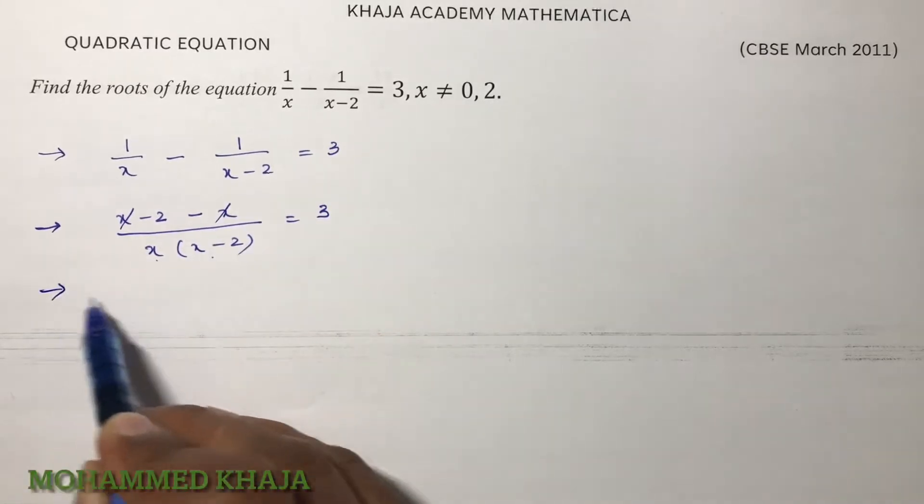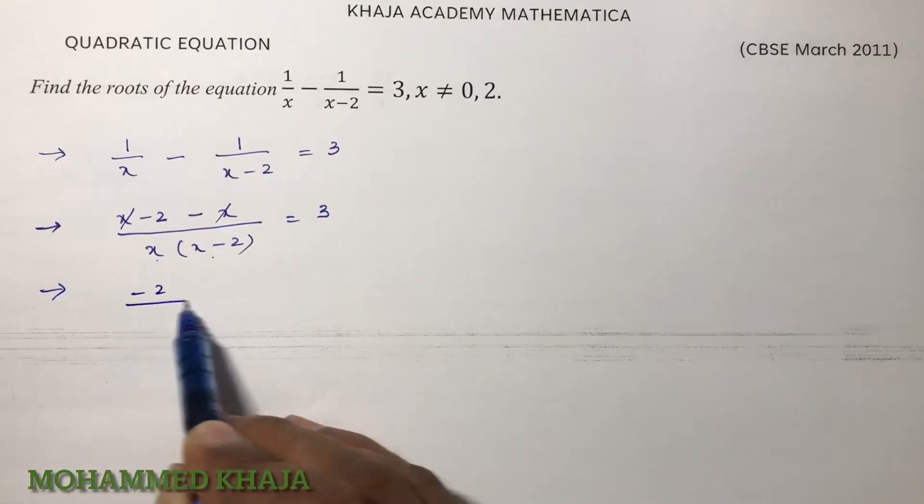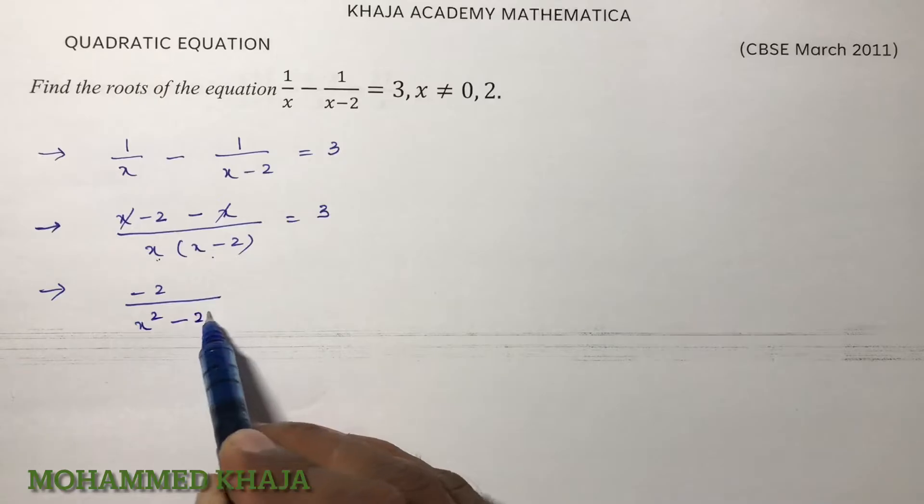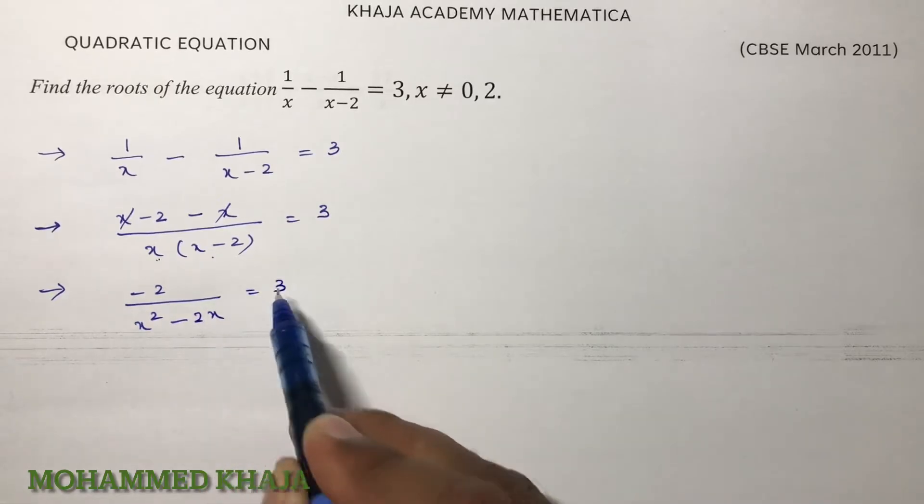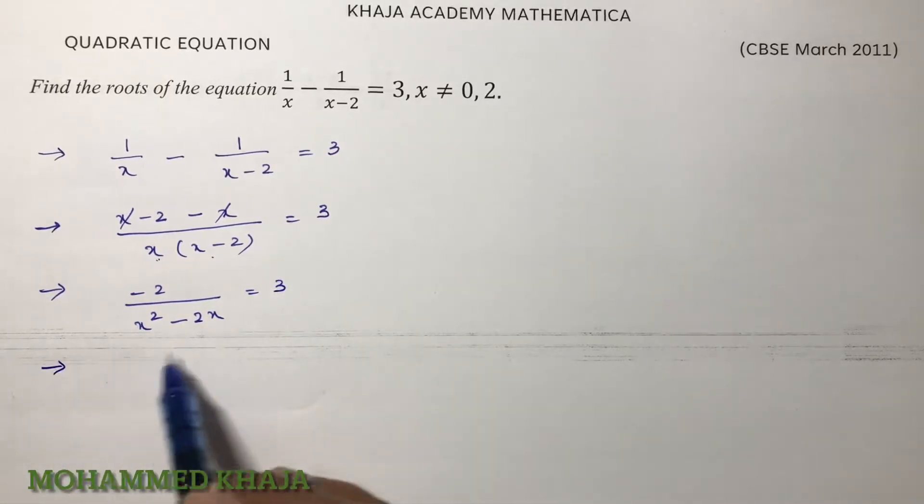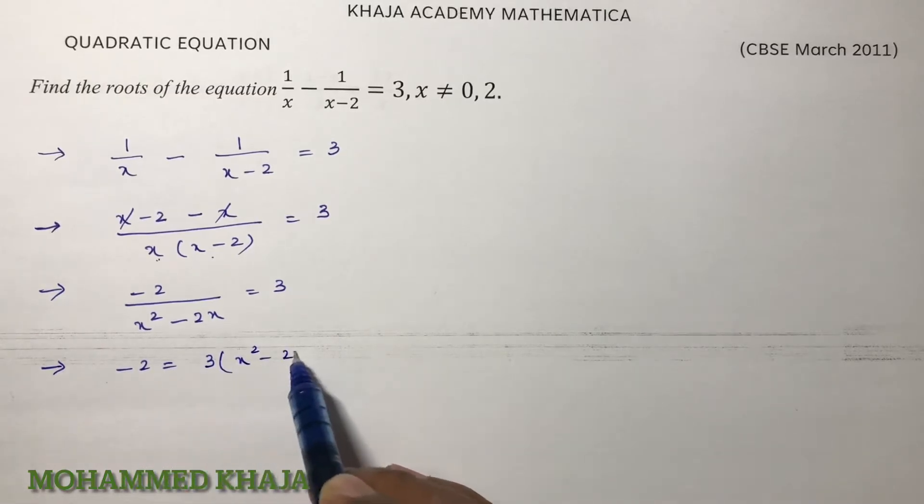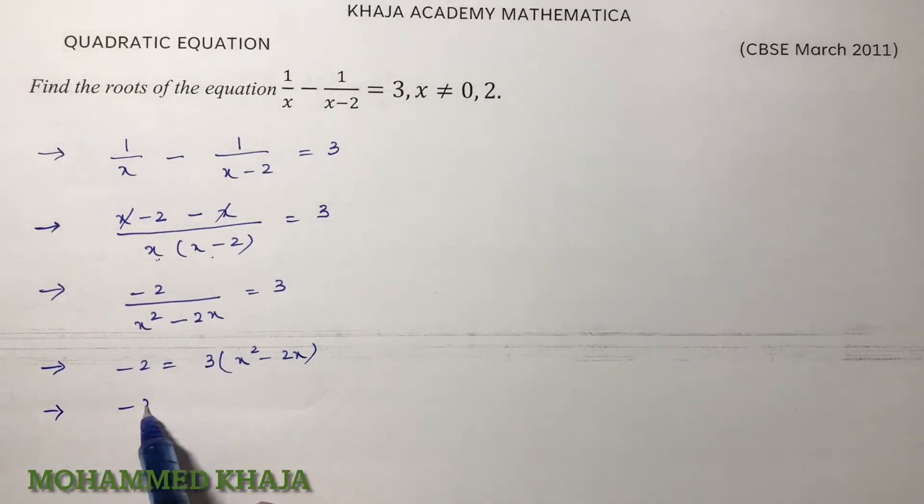Here x and -x will get cancelled. -2 by x(x-2) = 3. -2 = 3(x² - 2x). -2 = 3x² - 6x. So 3x² written in standard form: 3x² - 6x + 2 = 0.